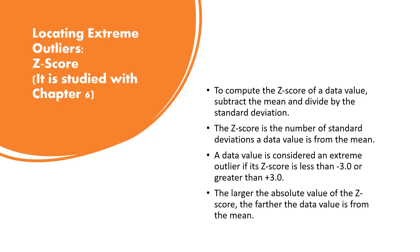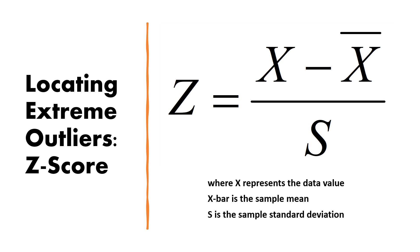Another way to locate extreme outliers is the z-score. The z-score is studied in detail in chapter six. To compute it, subtract the mean from the data value and divide by the standard deviation. The z-score tells you how many standard deviations a data value is from the mean. A data value is considered an extreme outlier if its z-score is less than −3.0 or greater than 3.0. The formula is: z = (x − x̄) / s, where x is the data value, x̄ is the sample mean, and s is the sample standard deviation.